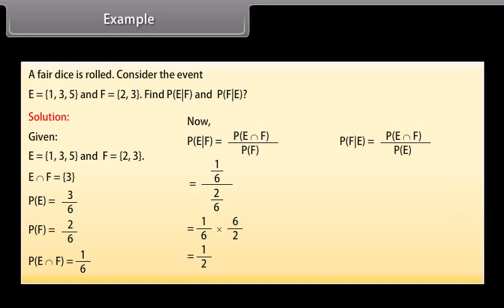Conditional probability of F given E = P(E ∩ F) / P(E) = (1/6) ÷ (3/6) = 1/6 × 6/3 = 1/3.